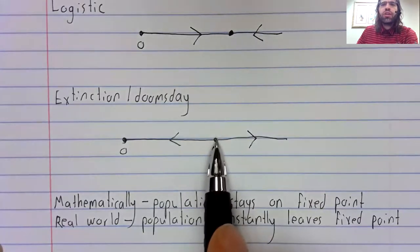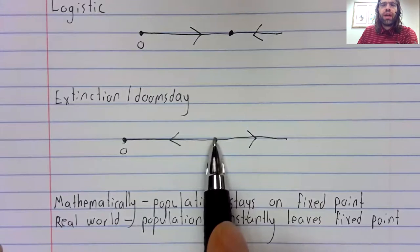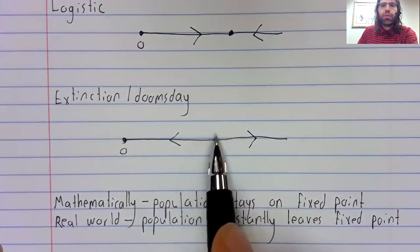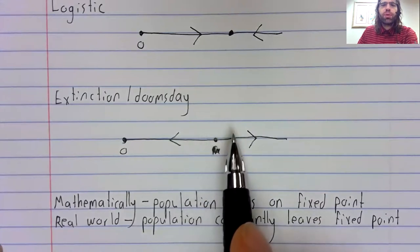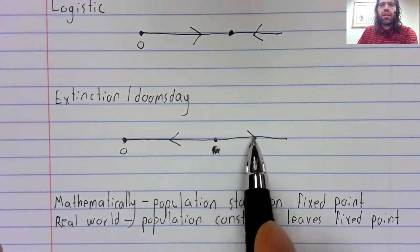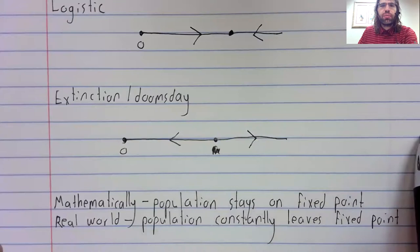Here, we could never see this fixed point in the real world, because in the real world, the population will inevitably be pushed around by random happenstance, and once the population is pushed off the fixed point, it goes away from the fixed point.